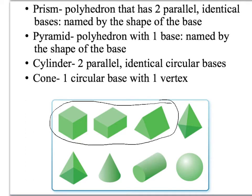They're named by the bases, so the first two right here are rectangular prisms. Even though this one right here is a square, a square is a type of rectangle, so those are both rectangular prisms. The third one, Emma, can you tell me what shape that is right there? Triangle. Triangle. So that is a triangular prism.